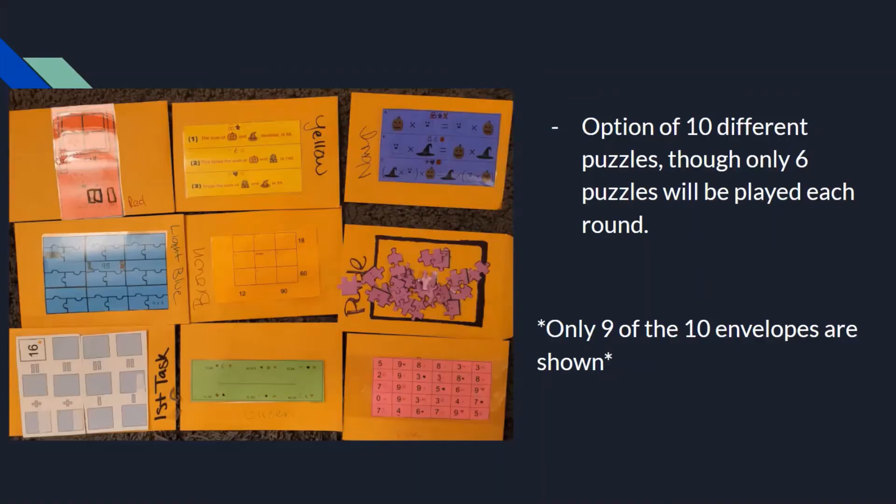There's an option to play through 10 different puzzles though only six puzzles will be played each round. Two of the puzzles have two answers that will dictate which six puzzles you would play each round. The types of puzzles included are multiplication, two truths and a lie, some multiplication puzzles, place value, addition, and multiplication riddles. Though color is shown here on the envelopes, it is completely optional and only used to help students identify which envelope to open next. You can simply write the name of the color on the envelope and students will still be able to decipher which envelope they need to go to next.